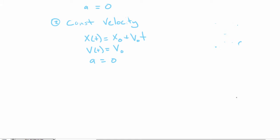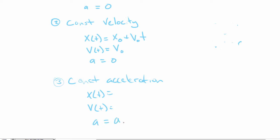Constant velocity problems occur in nature quite frequently — it's not terribly interesting stuff, but it does happen. The most interesting type of motion we're going to deal with is motion with constant acceleration. In this case, we can write down an equation for x as a function of time, an equation for v as a function of time, and we know that a is some constant — we'll call it a₀ or whatever.